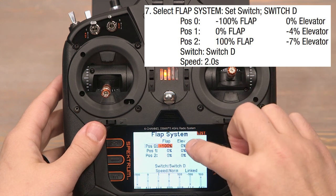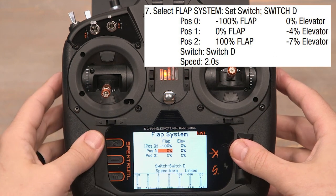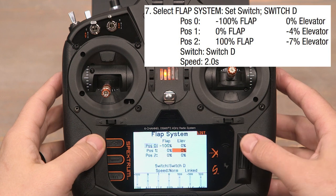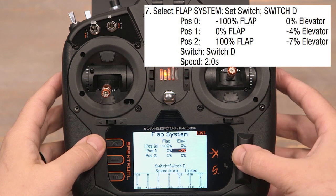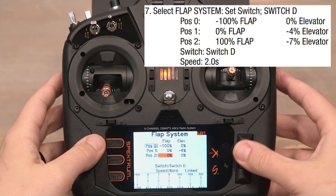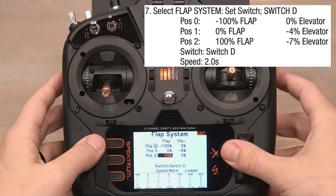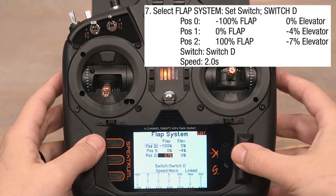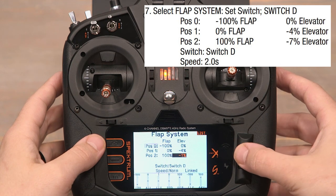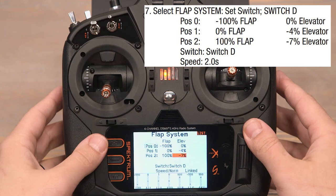The elevator mix for position zero should stay at zero percent. The position one flap value should remain at zero percent, while the elevator mix for position one should be negative 4. Click on the elevator mix and scroll left until we get to negative 4. Now the position two flap value should be set to positive 100% — click and scroll right until we get to 100%. Then set the elevator mix to negative 7.